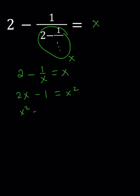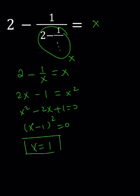x squared minus 2x plus 1 equals 0. This means x minus 1 squared equals 0, and this means x equals 1. So the value we're looking for is 1.